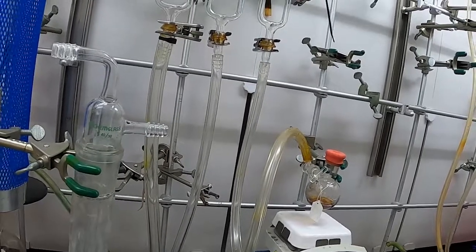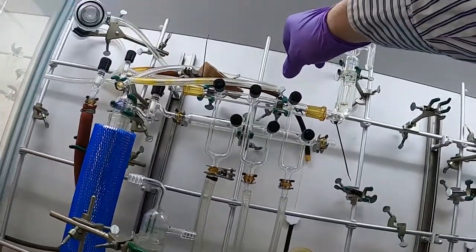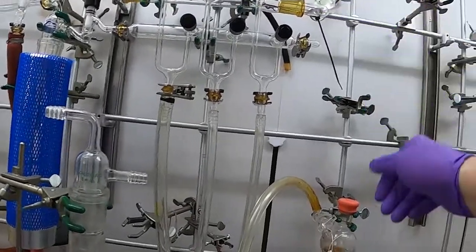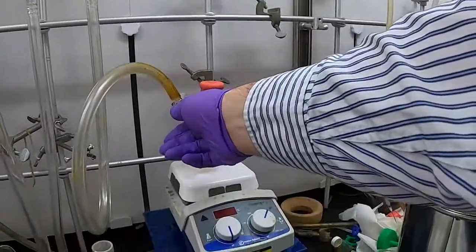What we can do then is on our Schlenk line, open our gas line here. You can see that's our top one. This will let gas into our reaction. We then open it to our flask.